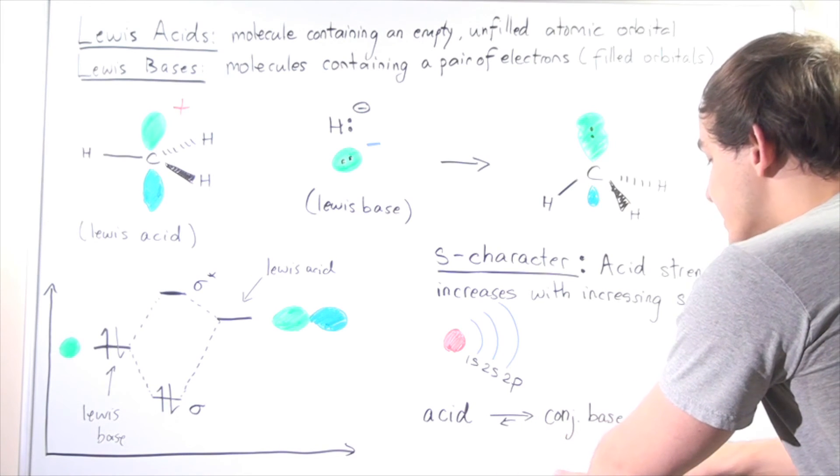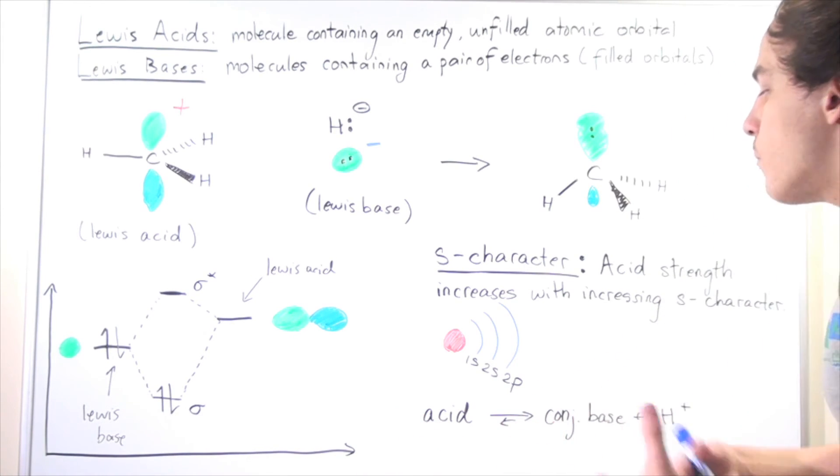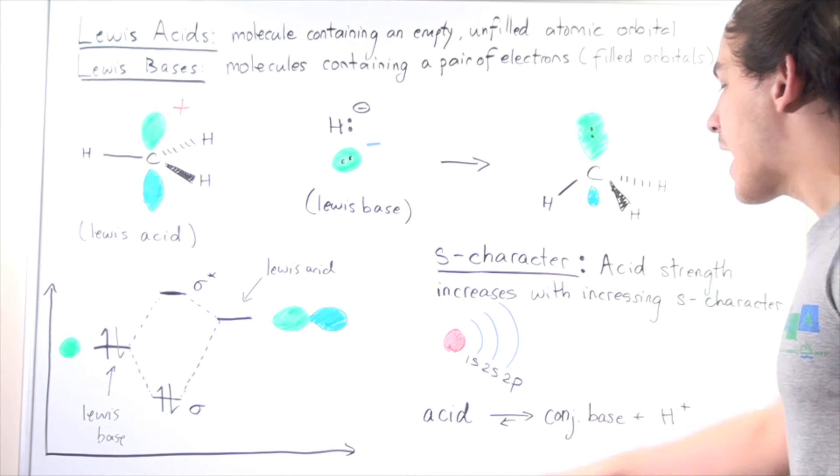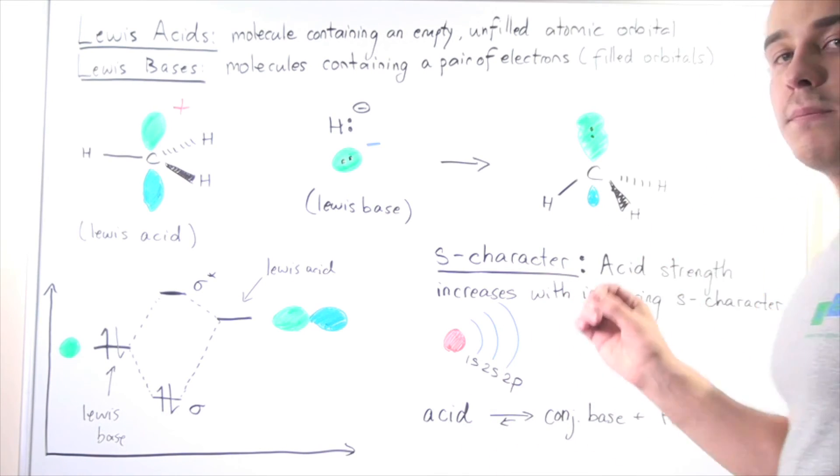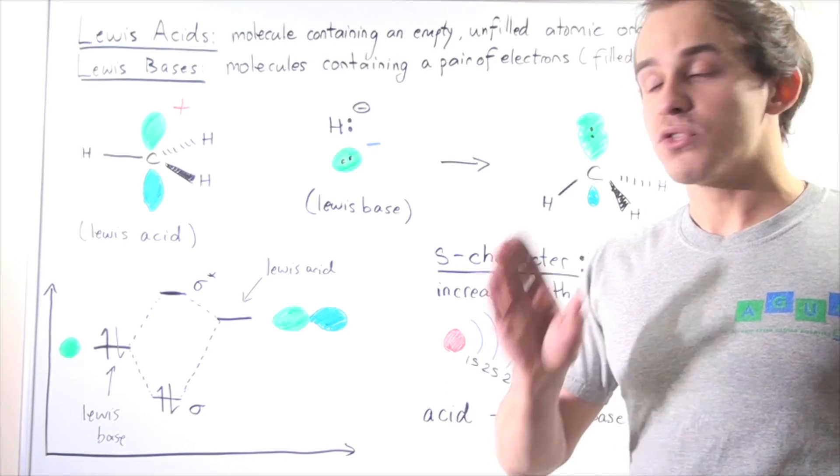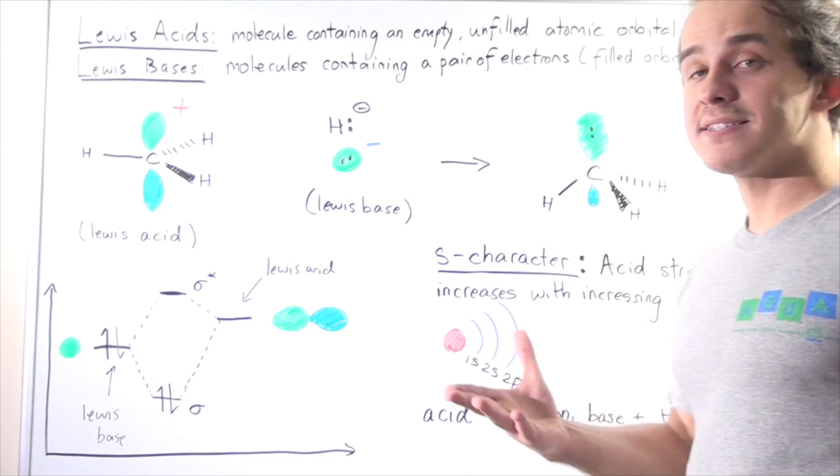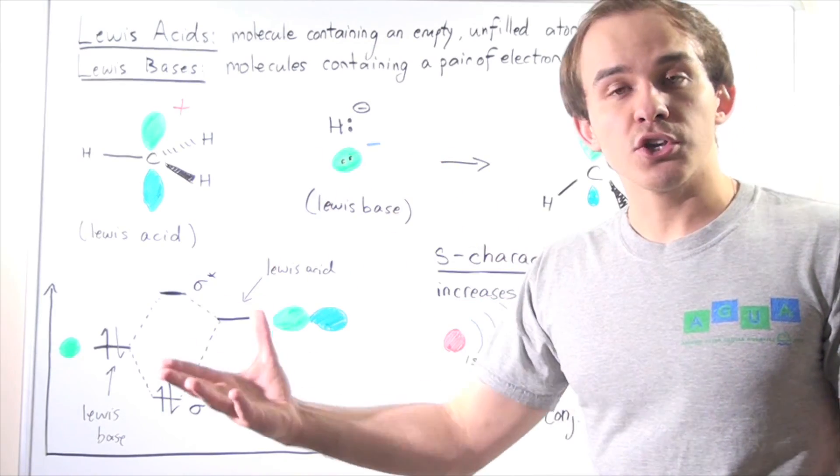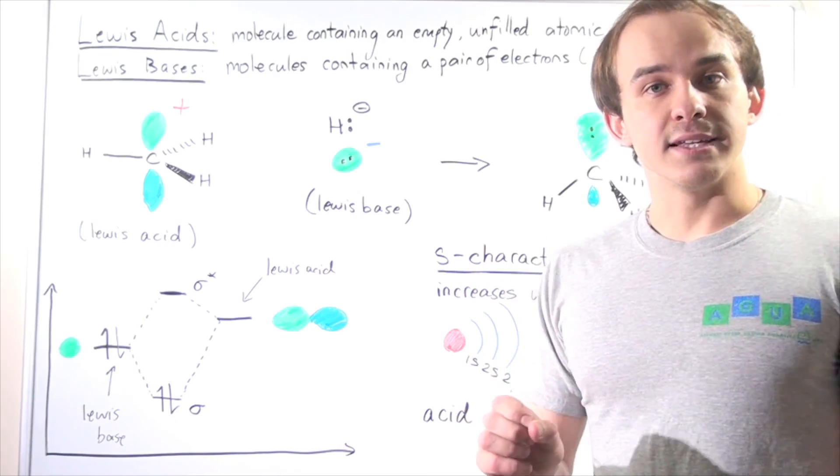If we have a stable conjugate base, that means our acid will be more likely to form this conjugate base, and therefore our acid will be more likely to dissociate, and that means our acid will be a stronger acid. Therefore, the more S character a Bronsted-Lowry acid has, the stronger the base it produces, and that means the better that acid.